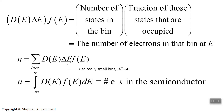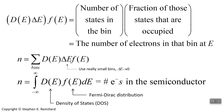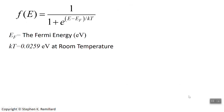Let's annotate this final expression: D of E is the density of states function, DOS. And F of E is the Fermi-Dirac distribution, which we will normally refer to as the Fermi function. The Fermi-Dirac distribution is described functionally as 1 divided by 1 plus the exponential of energy minus the Fermi energy, divided by kT. K is Boltzmann's constant; the product kT at room temperature is 0.0259 electron volts. E sub F is called the Fermi energy, also in electron volts.